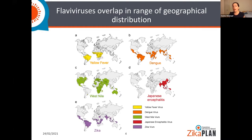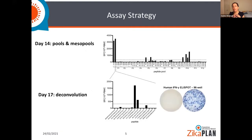In order to answer these questions, you need to know which exact parts of the virus are recognized by T cells. In contrast to B cells and antibodies, T cells do not recognize the entire virus — they recognize small parts of it that are presented on the surface of infected cells. So in order to know which parts are recognized, we had to map these responses.